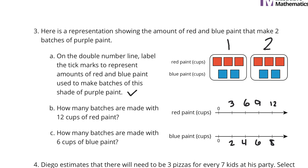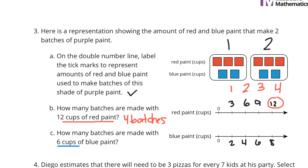How many batches are made with 12 cups of red paint? This is a single batch, a double batch, a triple batch, a quadruple batch. So 12 cups is going to be 4 batches. Then, how many batches are made with 6 cups of blue paint? Here's the 6, and it looks to be 3 batches.